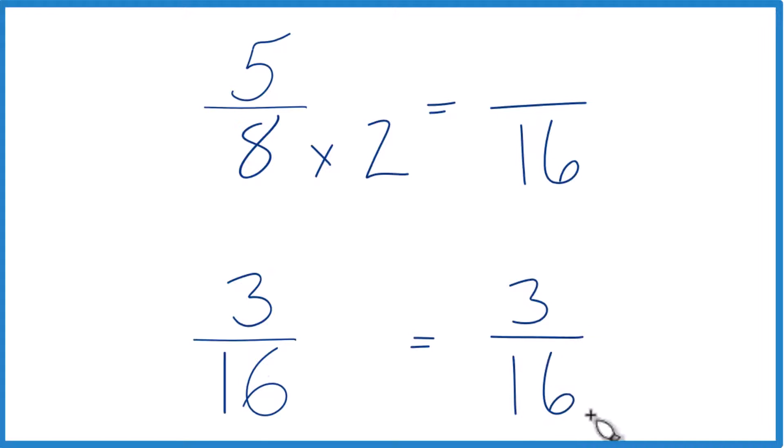Now we have the same denominator, we can just compare numerators. Since we multiplied the denominator here by 2, we do need to multiply the numerator by 2. 2 over 2, that's just 1. So we're multiplying by 1. It doesn't change the value, just the way it's written.